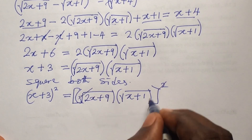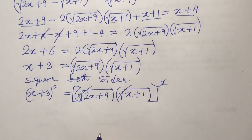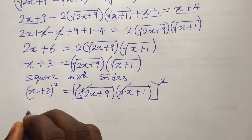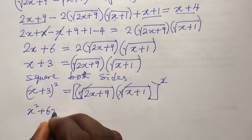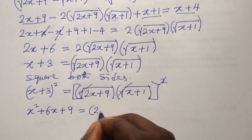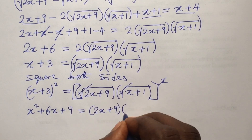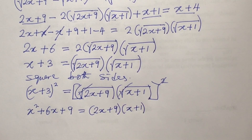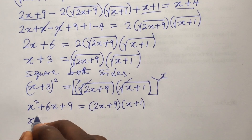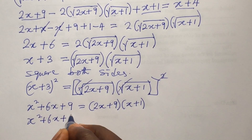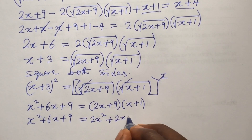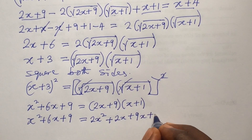Expanding the left side gives us x² plus 6x plus 9. On the right side, squaring removes the radicals and we are left with (2x plus 9)(x plus 1). Expanding the right side gives us 2x² plus 2x plus 9x plus 9, which simplifies to 2x² plus 11x plus 9.